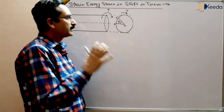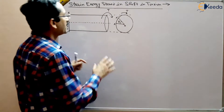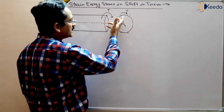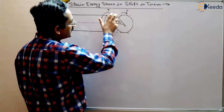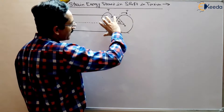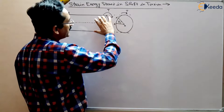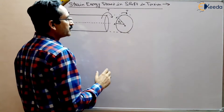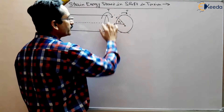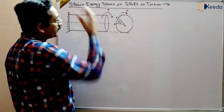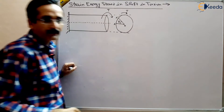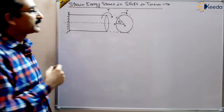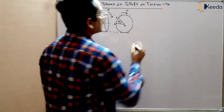Within a certain limit, if we increase the torque, the angle of twist will also increase. The angle of twist is basically depending on the torque — higher the torque, higher will be the angle of twist. Within the elastic limit, T and theta are proportional to each other.